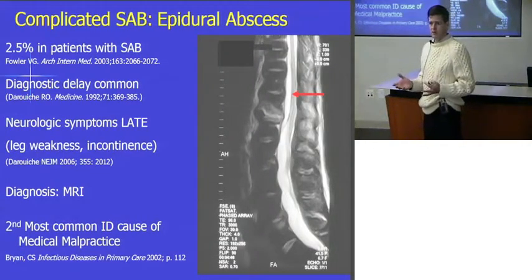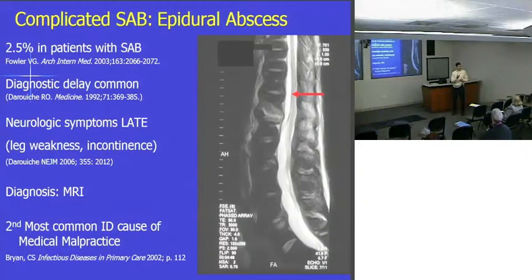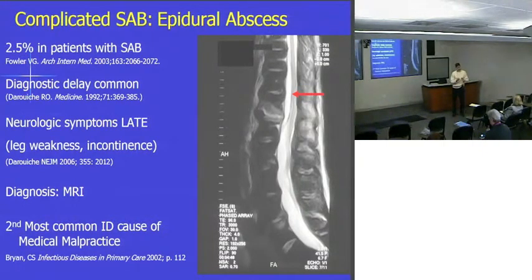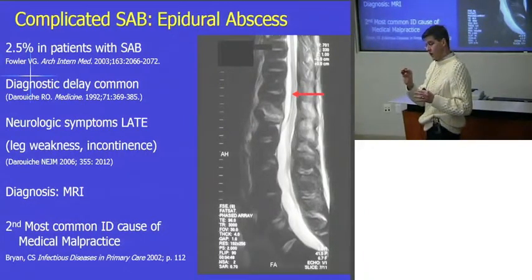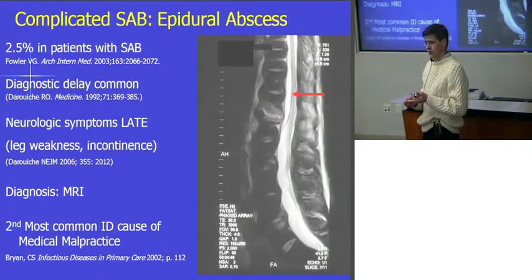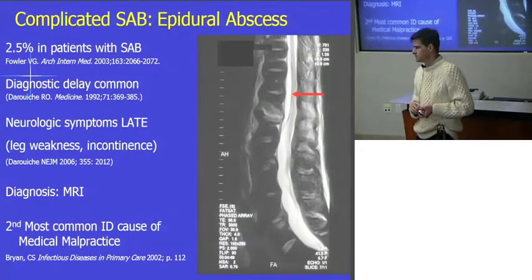Staph aureus is a smart adversary — sort of like a smart bomb. It's got these proteins on its surface that it expresses when the circumstances are appropriate. It will express certain proteins that have, on their surface, receptors that bind to specific host tissues — for example, collagen, fibrinogen, fibrin, bone sialoprotein. These allow the bacteria to specifically recognize certain host tissues and bind to them.